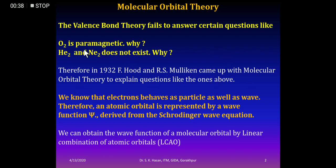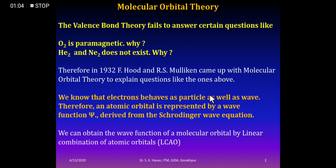We know that electrons behave as both a particle and a wave — the dual nature of electrons. Therefore, an atomic orbital is represented by a wave function ψ. An atomic orbital is the space around the nucleus where the electron is most likely found, and it is represented by a wave function derived from the Schrödinger wave equation.